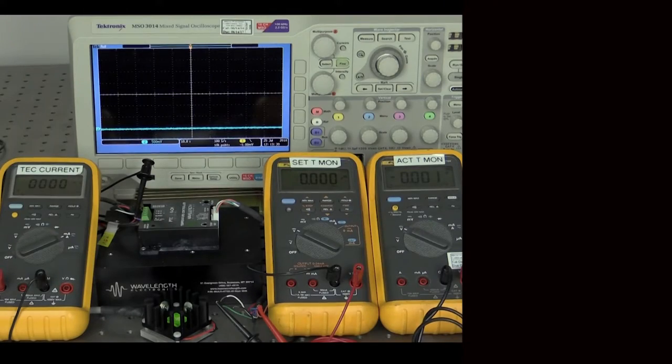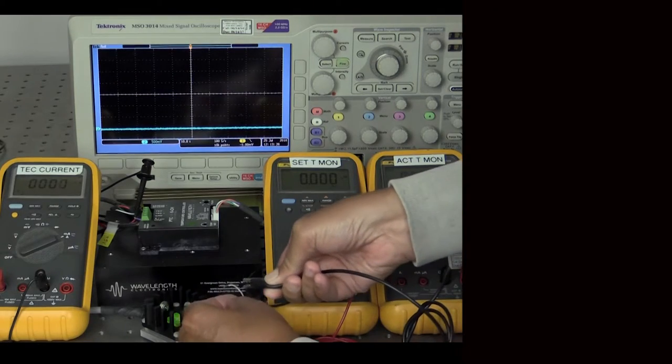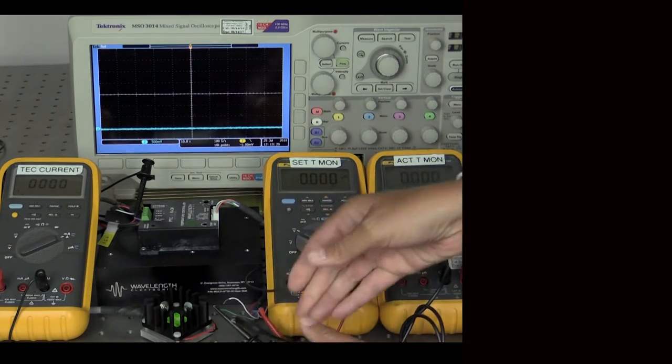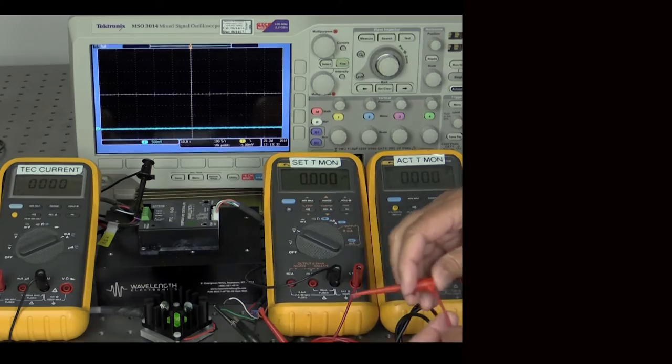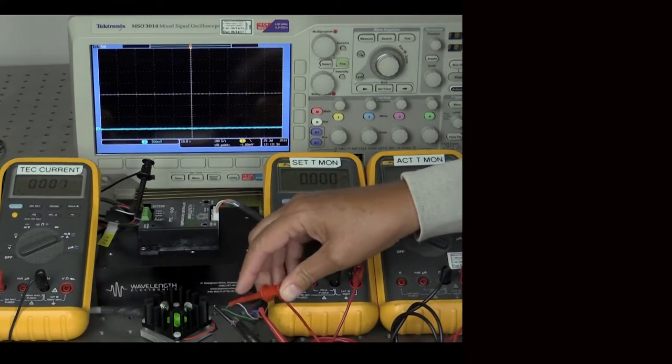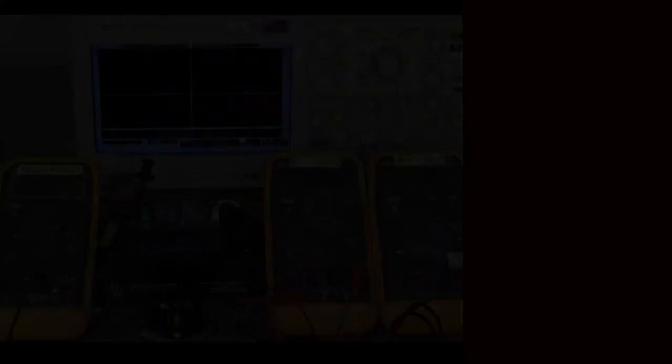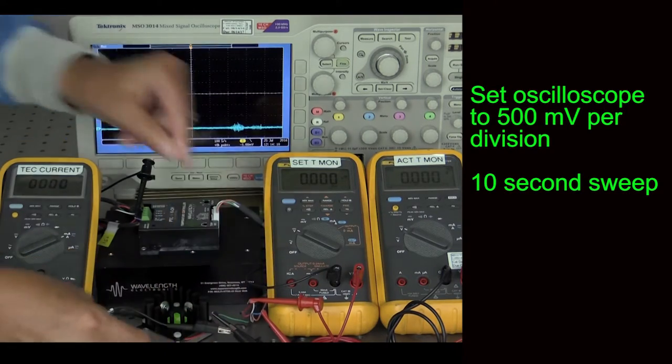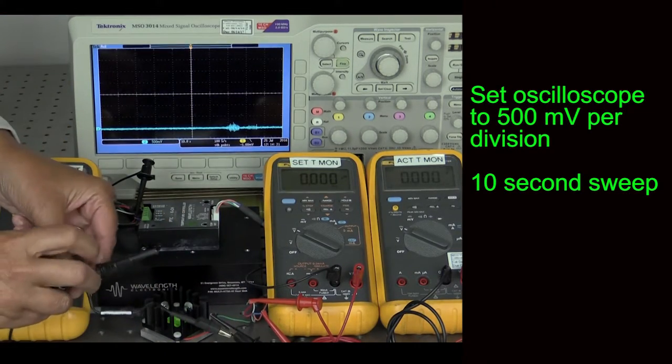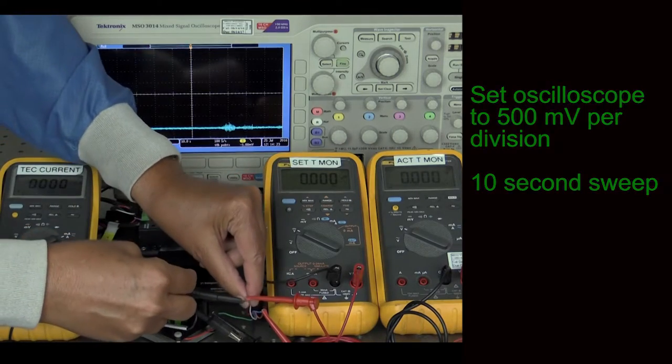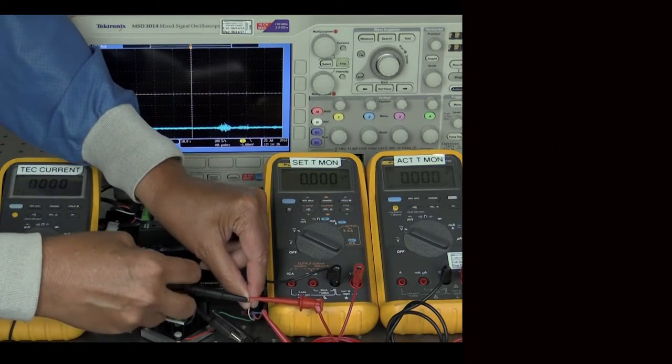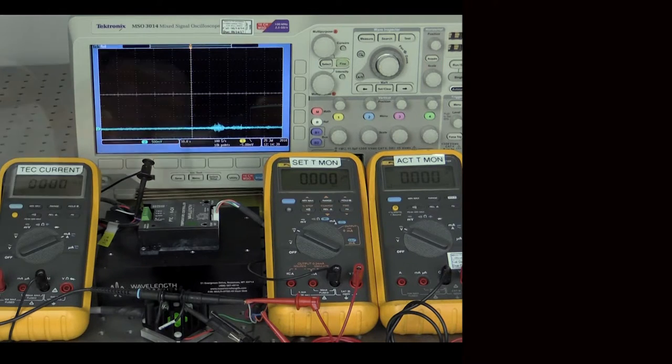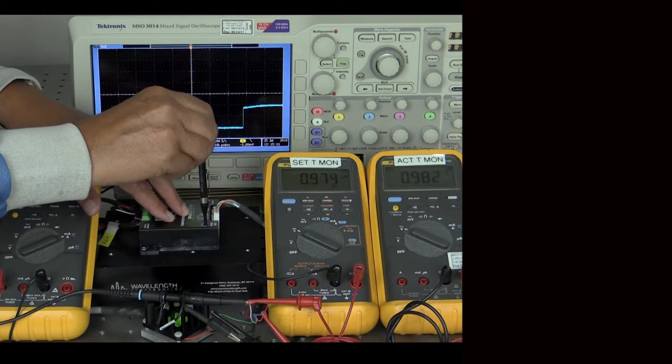For this demonstration we'll keep the ammeter in series with the thermoelectric. We'll install another voltmeter on the actual temperature monitor across pins 2 and 3 of J3 as well as an oscilloscope. Set the scope to 500 millivolts per division with a 10 second sweep time. We will use the default proportional gain of 14. For our example we want to operate our load at 16 degrees C, so the setpoint voltage needs to be 1.5 volts.